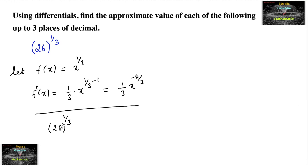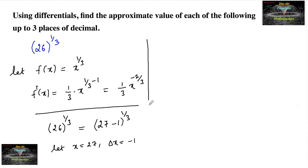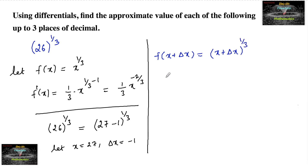For the cube root of 26, the nearest perfect cube is 27. We can write 26 as 27 minus 1, so we take x = 27 and delta x = -1. Then f(x + delta x) equals (x + delta x) to the power of 1/3.